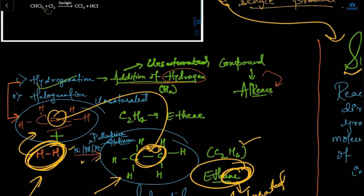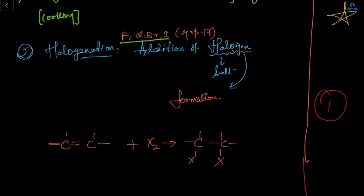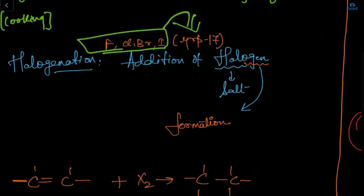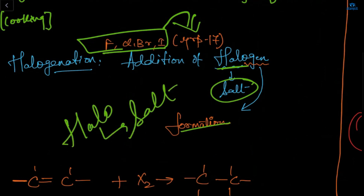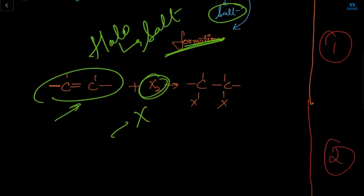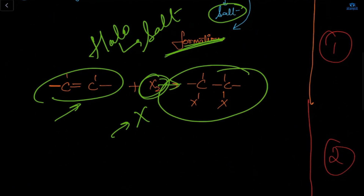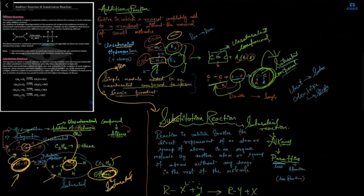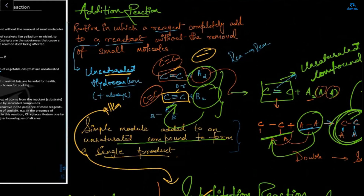Halogenation means the addition of halogens — fluorine, chlorine, bromine, and iodine — which belong to Group 17 in the periodic table. 'Halo' means salt and 'gen' means formation, so halogenation means salt formation. Here, the unsaturated compound with a double bond reacts with any halogen — represented as X — and converts into a saturated compound with single bonds everywhere. So addition means unsaturated is converted into saturated.